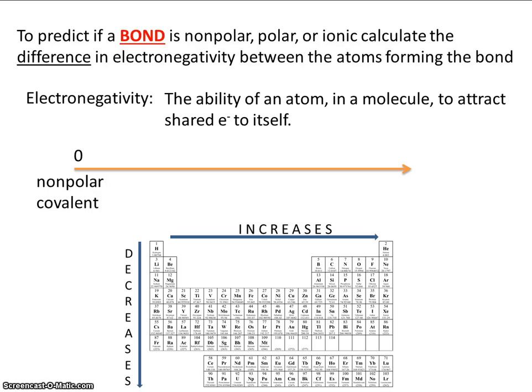If you subtract the two values and you discover that it's between zero and 1.7, that means that it's a polar bond.